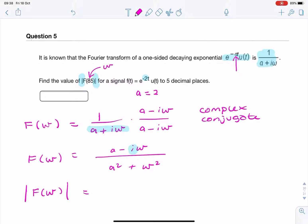And to do that, you would simply find the magnitude of the numerator, because the denominator is already real. And if you simplify that, it's simply 1 over a squared plus omega squared.